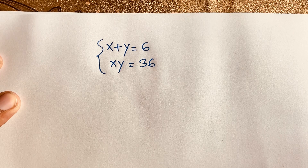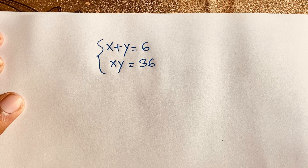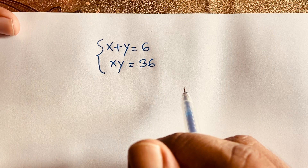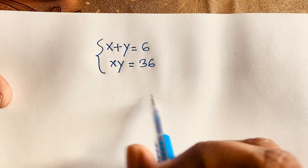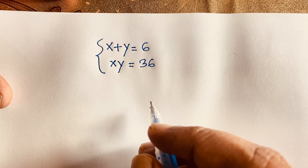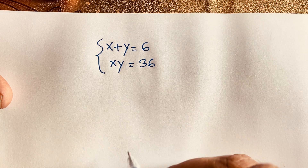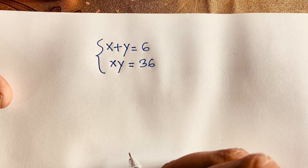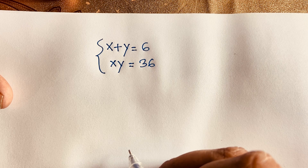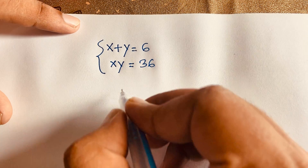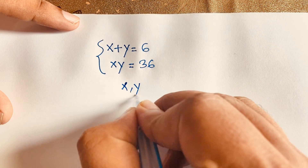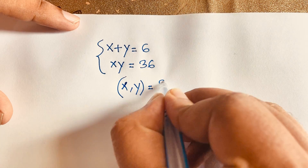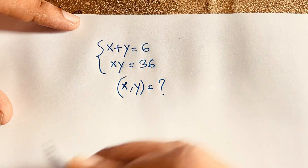Hello everyone. In this video we have solved this interesting German Math Olympiad question. The question is: x plus y is equal to 6, and x times y is equal to 36. We find out what is the value of x and y in this Math Olympiad question.